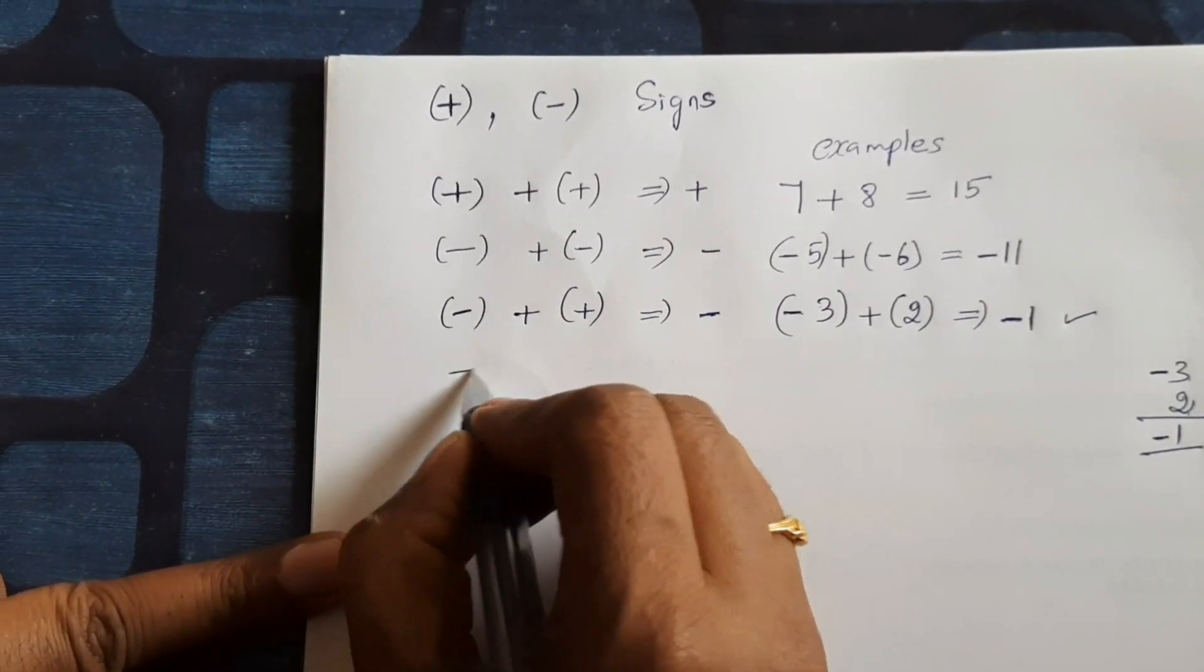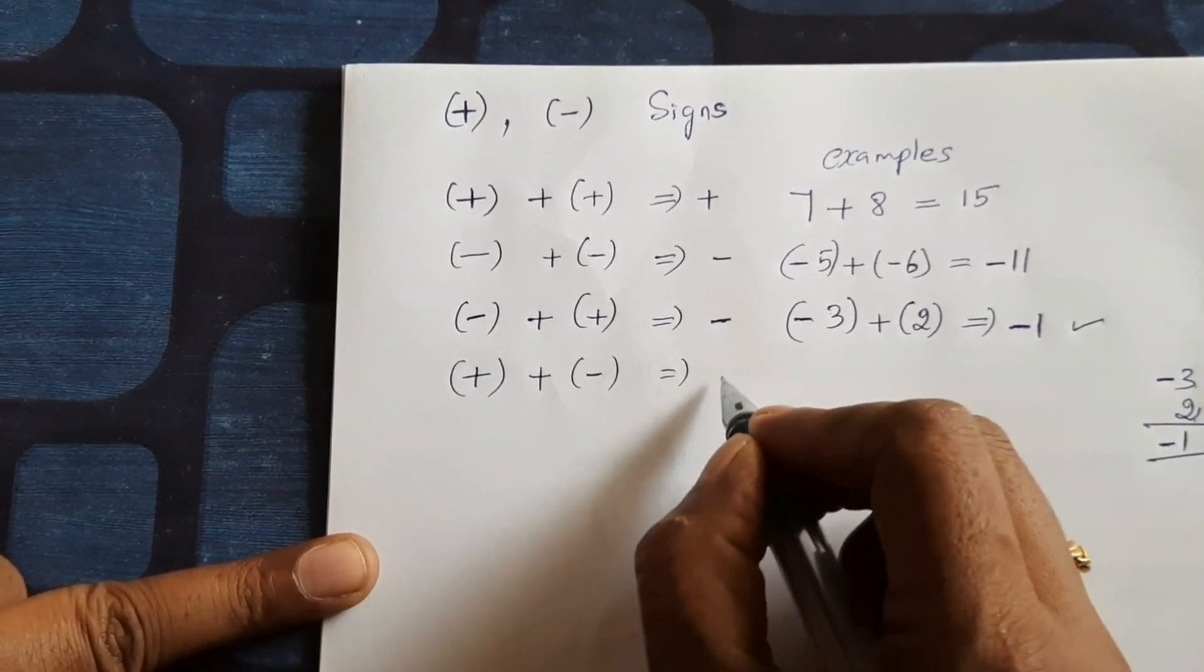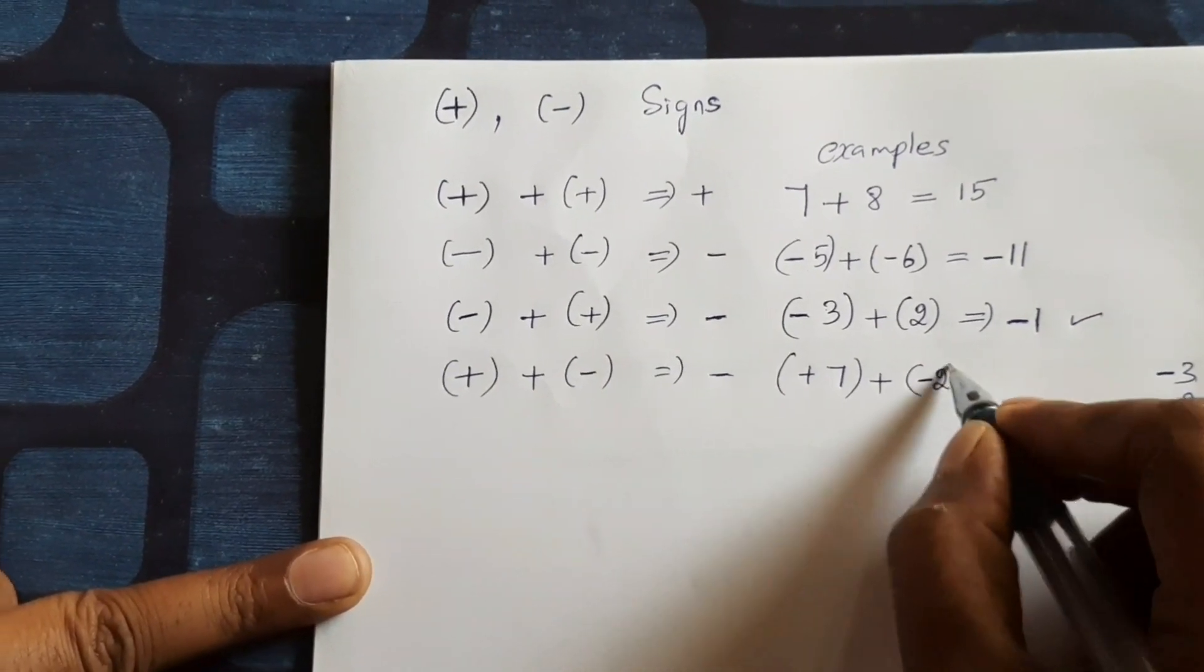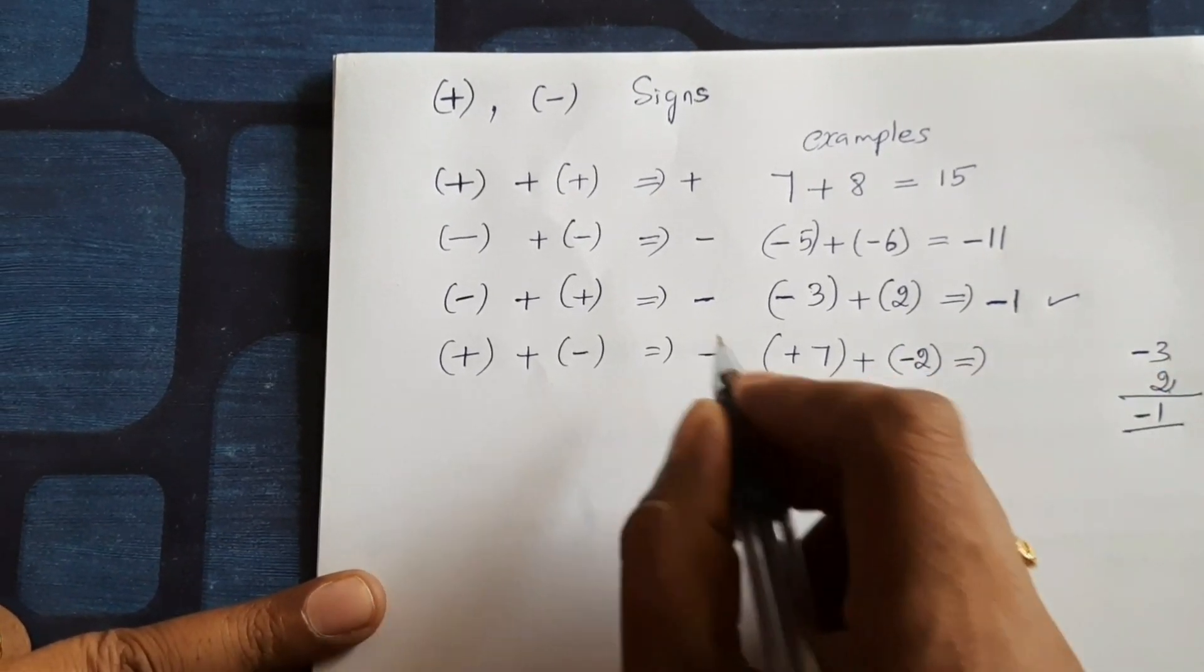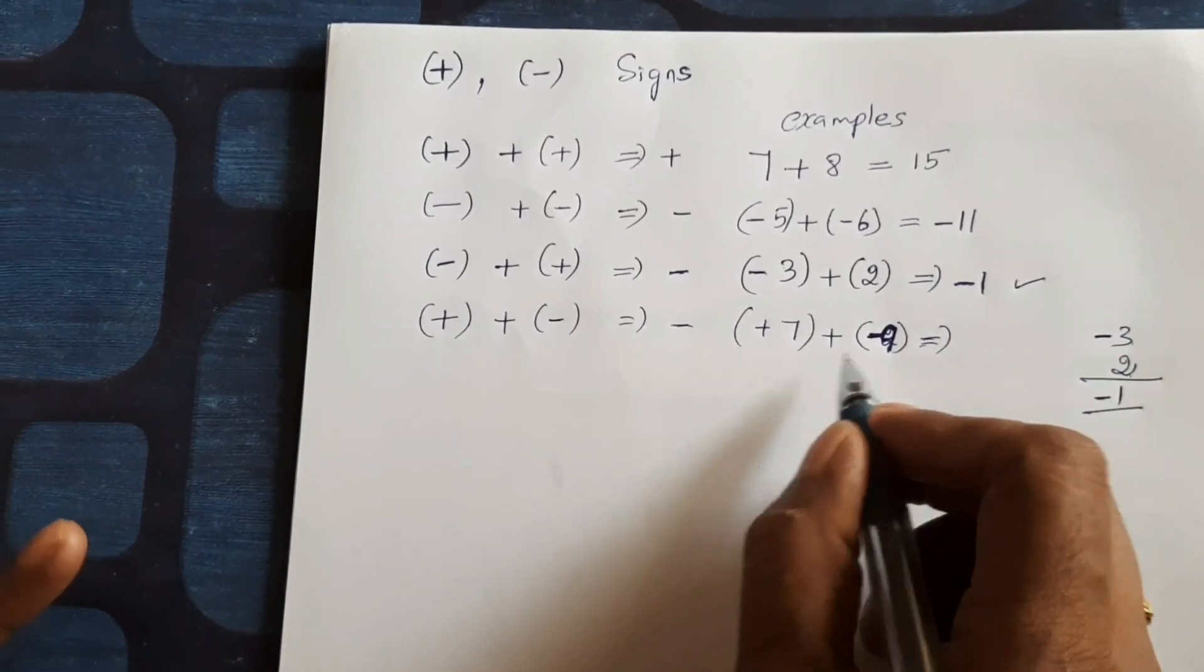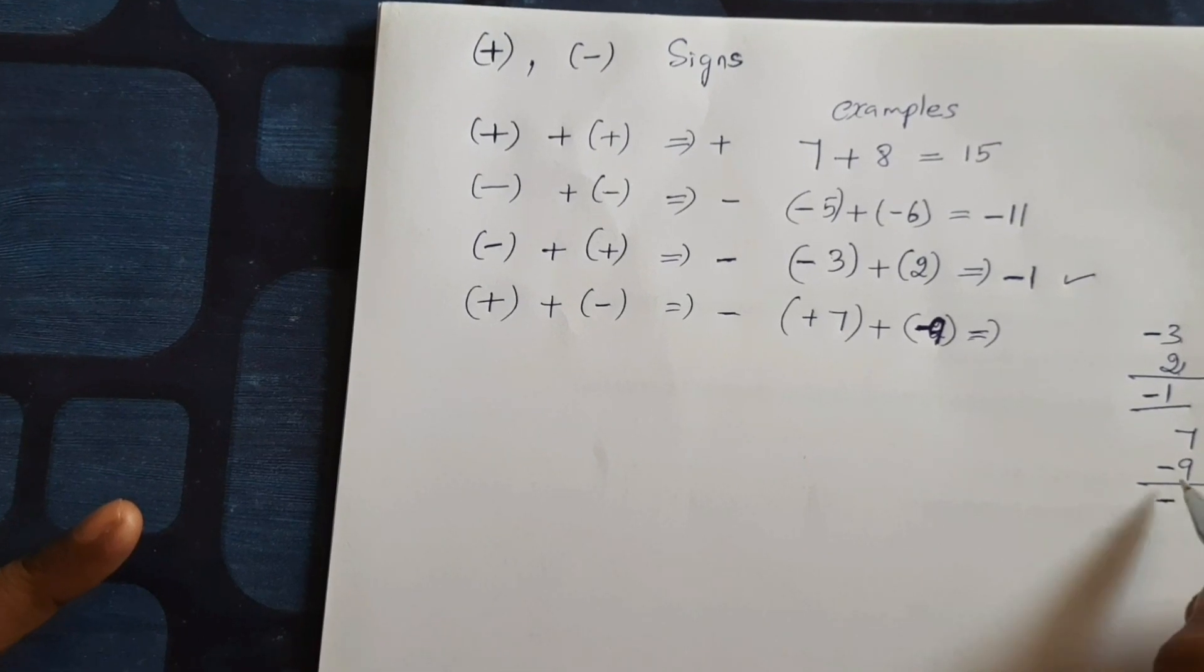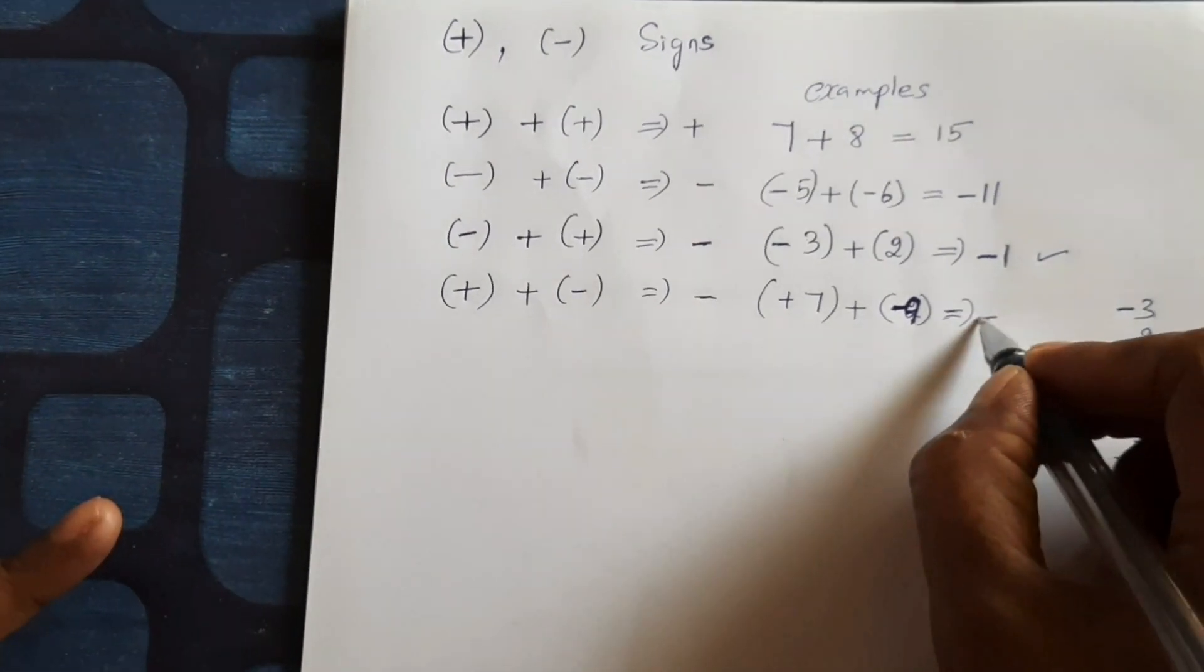Next plus plus minus. It gives negative. So plus 7 plus minus 9. So it gives 7 is positive number, minus 9 is negative number. So here also negative sign is minus 2.